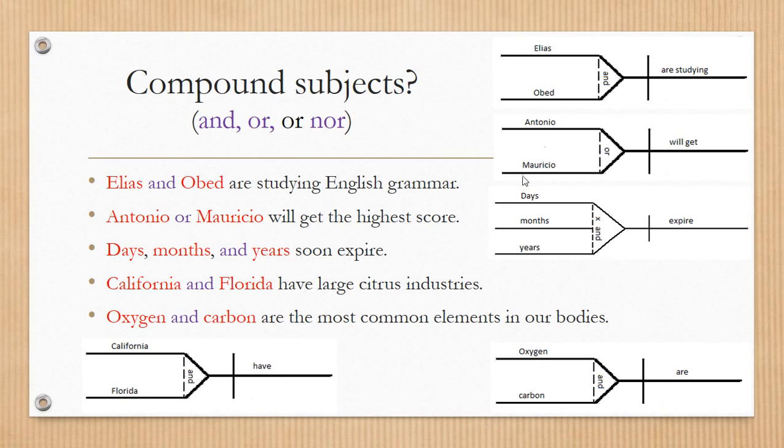So this is going to be the compound subject for this: Days, months, years. The X between days and months, and and between months and years. Then expire. The second, the next example: California and Florida have. Then oxygen and carbon are.